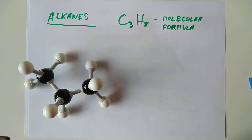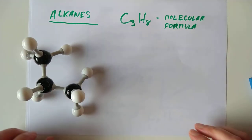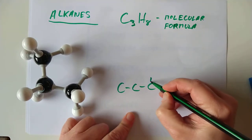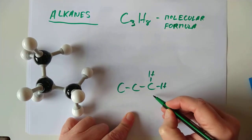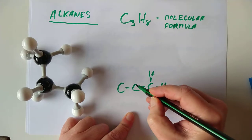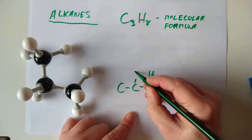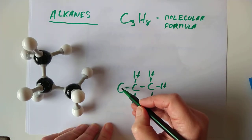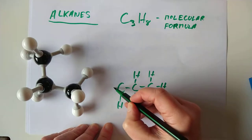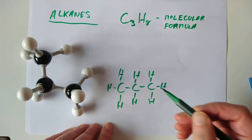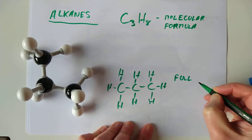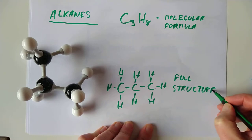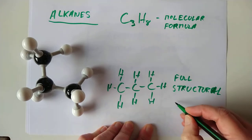You could show the full version — draw 1, 2, 3 carbons and add the required number of hydrogens to each. This carbon only has one bond, so add three hydrogens. This carbon has two bonds, so add two more. Carbon always has four bonds, and this last carbon needs another three hydrogens. This is called the full structural formula — it gives you the full version, nothing hidden.